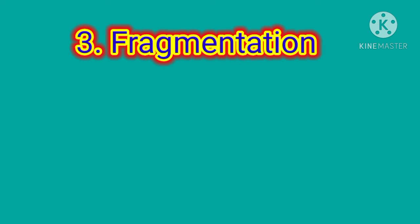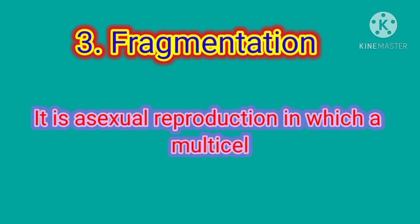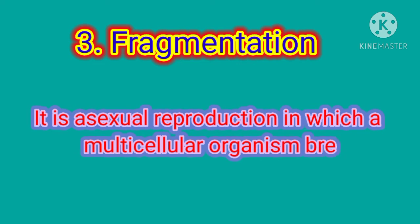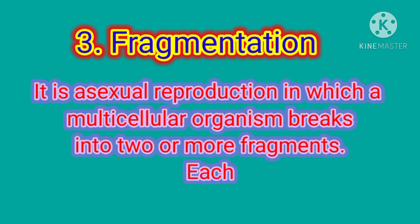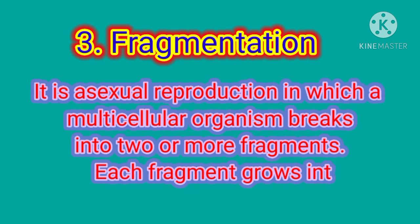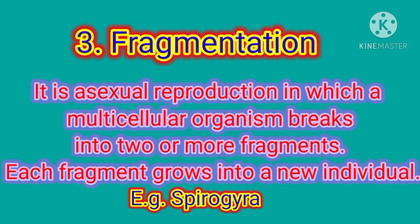The third type of asexual reproduction is fragmentation. It is reproduction in which a multicellular organism breaks into two or more fragments and each fragment grows into a new individual. For example, spirogyra.